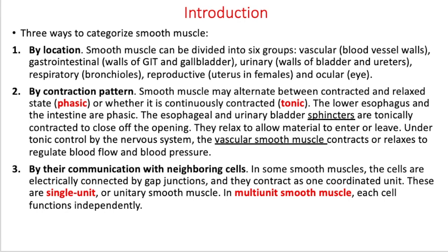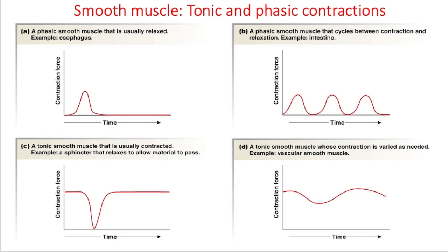First, we're going to talk a little more about tonic and phasic contractions. Phasic smooth muscles alternate between phases of contracted and relaxed states. For example, in your esophagus — you don't want your esophagus to always be contracted because you won't be able to eat anything. It needs to contract during peristalsis when you're trying to push food down, and likewise in your intestines. So it's this phasic control of the autonomic nervous system that your body does for you when you need to digest food.